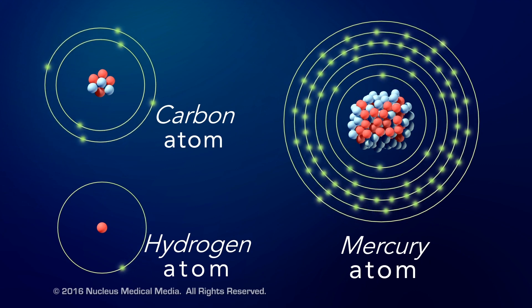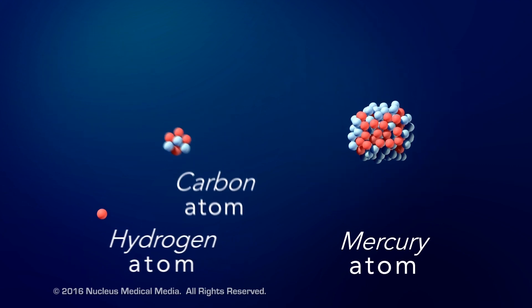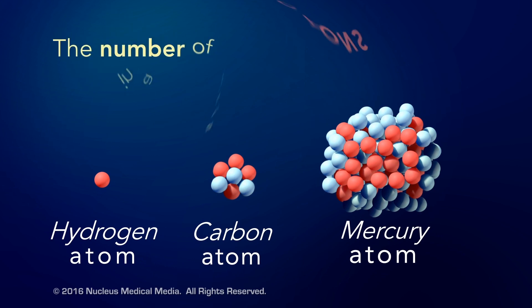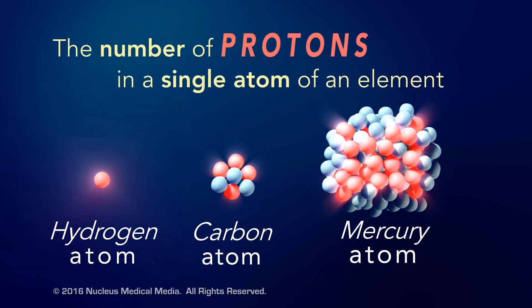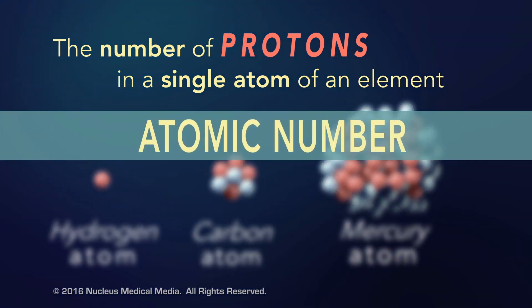So what makes one element different from another? Well, it's the number of protons in a single atom of an element. This is called the element's atomic number.